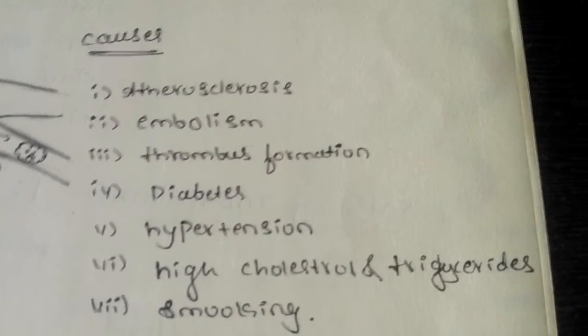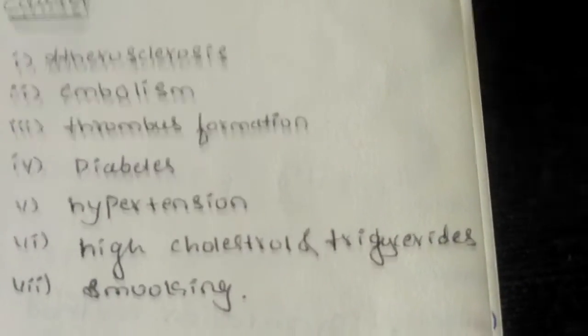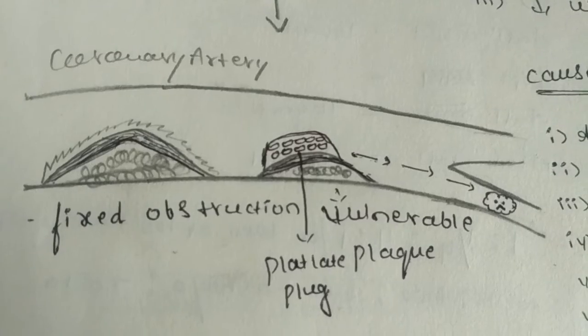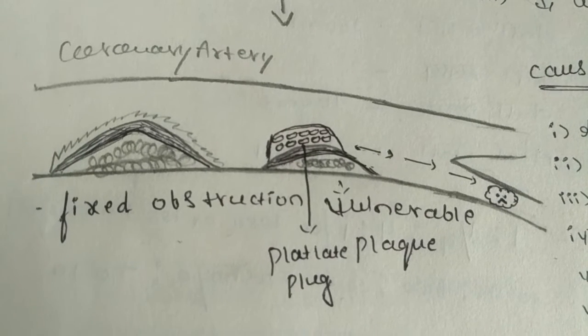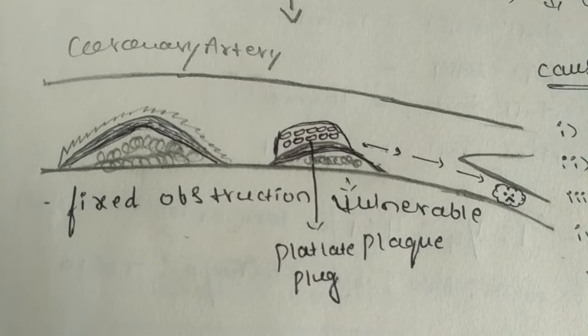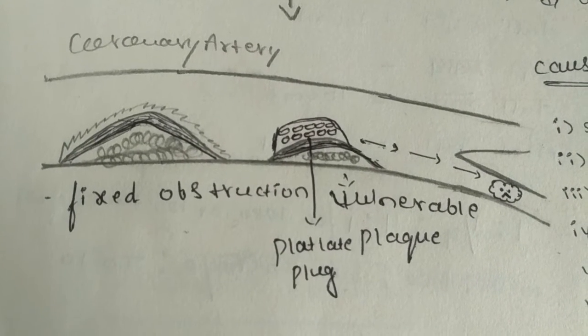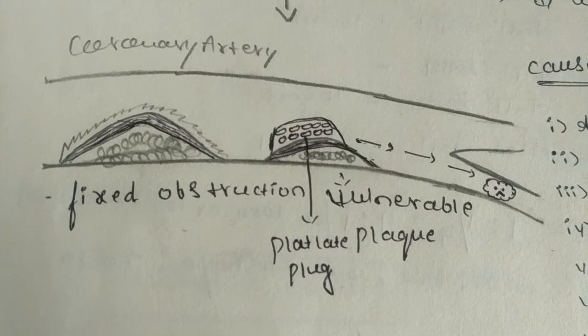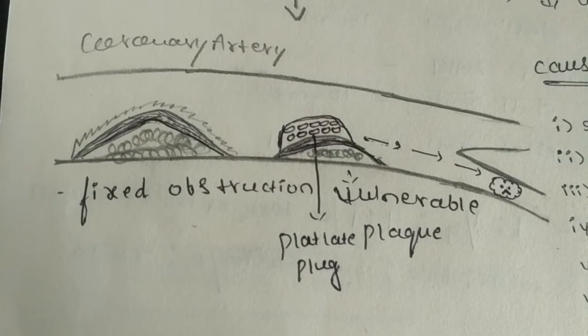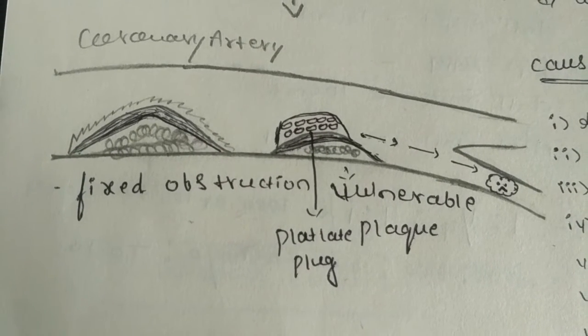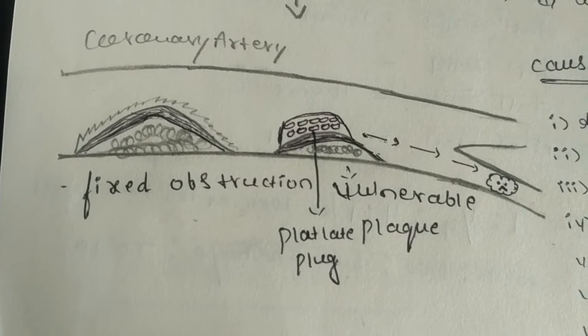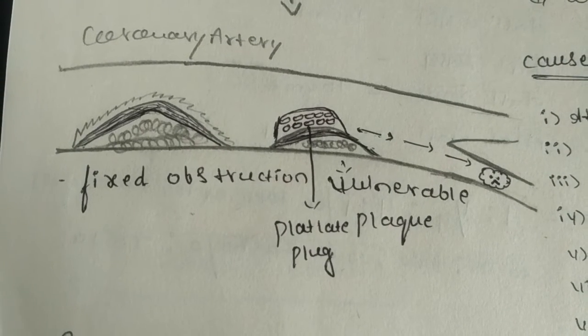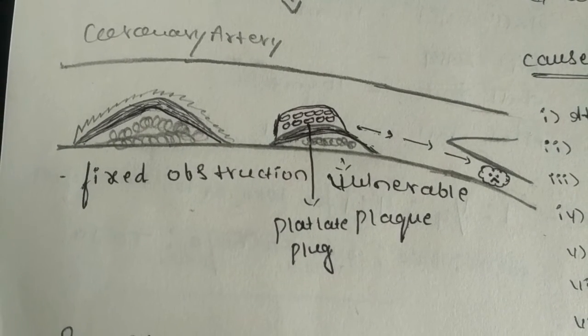The causes for this is atherosclerosis. Atherosclerosis is the accumulation of fatty tissue or fatty layer which obstructs the flow of artery, which is a fixed obstruction. Two types of obstructions are present: fixed obstruction and vulnerable obstruction.